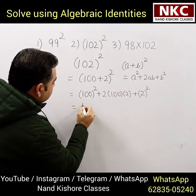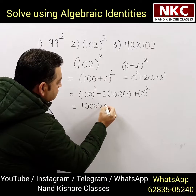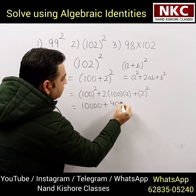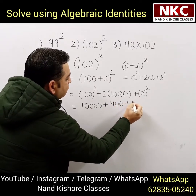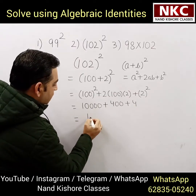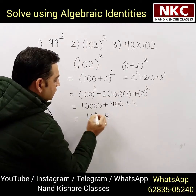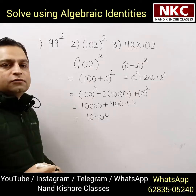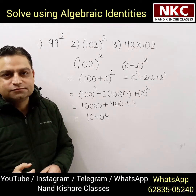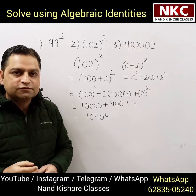100 square is 10,000, as I just explained. Then 2 times 100 times 2 is 400, and 2 square is 4. If we add all of them we get 10,404 as the final answer. So the first two questions are done.